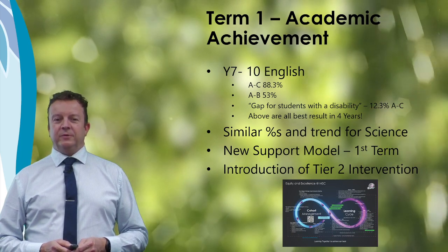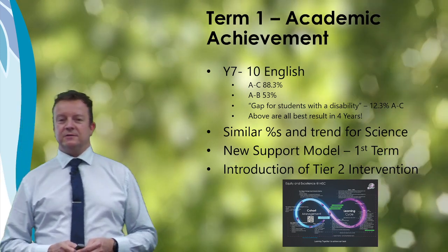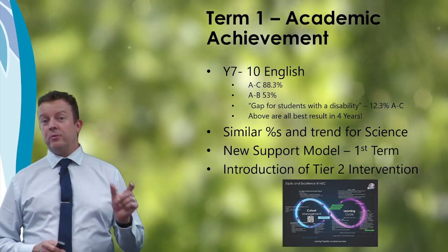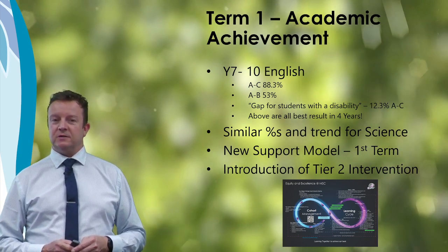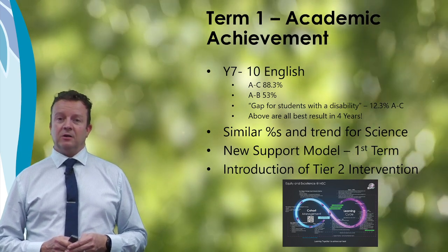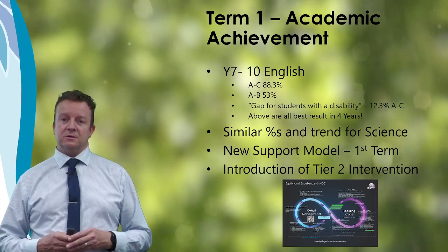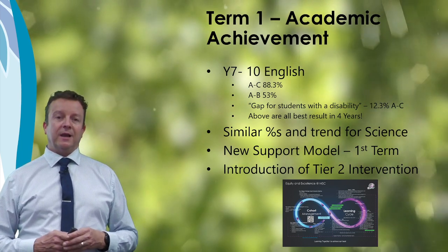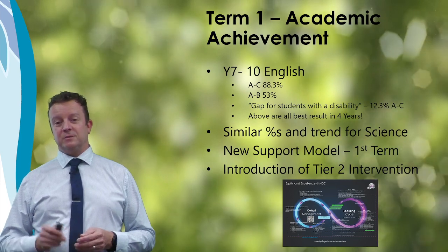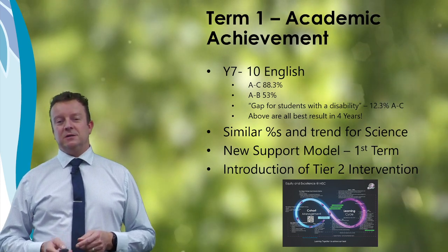Term 1 was a very solid start. We've got the highest result we've achieved in four years for both English and science in years 7 to 10, when we talk about the number of students achieving an A to C and an A to B. We've also got the smallest gap we've had for any students receiving support. We've got a new support model that's continued to evolve from last year, in line with the state's vision for inclusion, where all the supporting resources and adjustments are made in the students' classrooms and not in separate classes and additional programs. That's starting to get some traction with great results, and we look forward to refining that model as the year goes ahead.